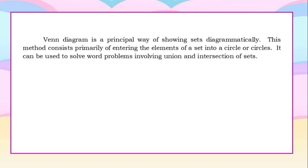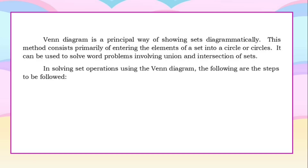The Venn diagram is a principal way of showing sets diagrammatically. This method consists primarily of entering the elements of a set into a circle or circles. It can be used to solve word problems involving union and intersection of sets. In solving set operations using the Venn diagram, the following are the steps to be followed.